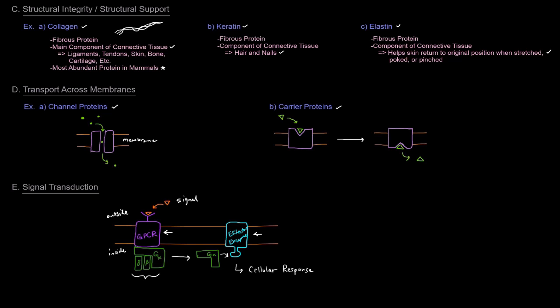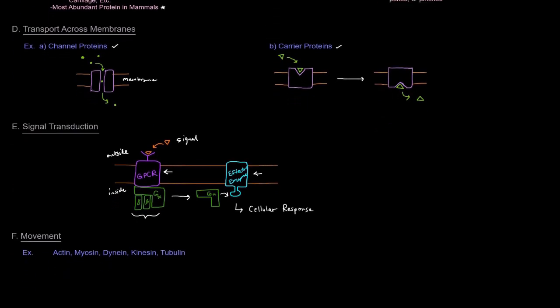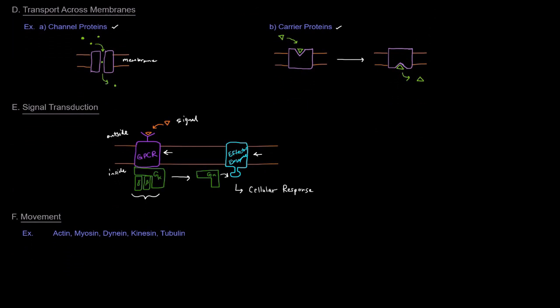And last, but certainly not least, is movement. If we're talking about movement within a cell across or involving microtubules, tubulin is important. If we're talking about muscular movement, we're talking about actin and myosin. Also, dianin and kinesin are important when it comes to movement. There's just a bunch of different proteins and structures and functions. The theme, basically, is that structure determines function.